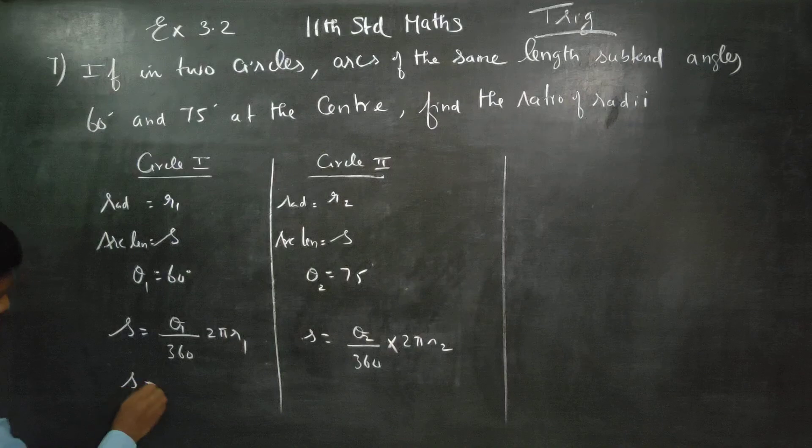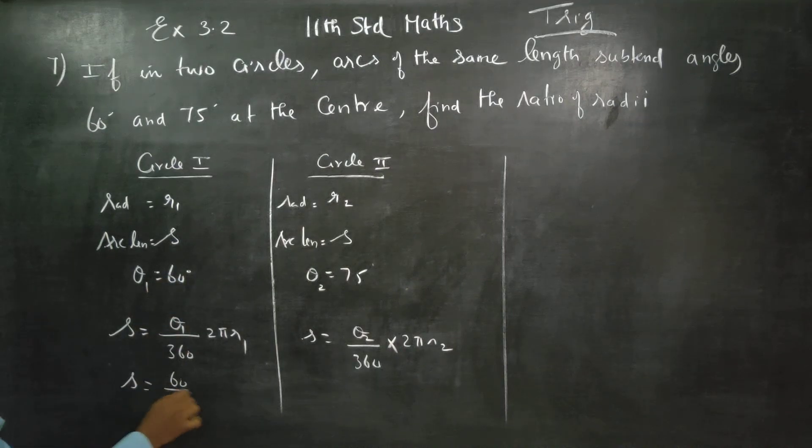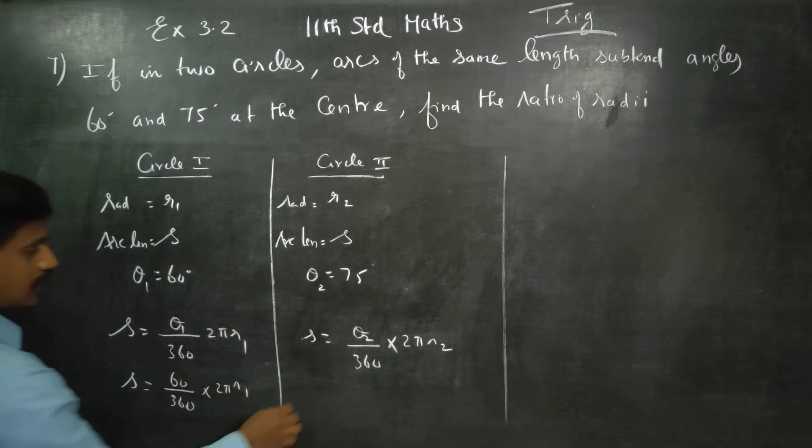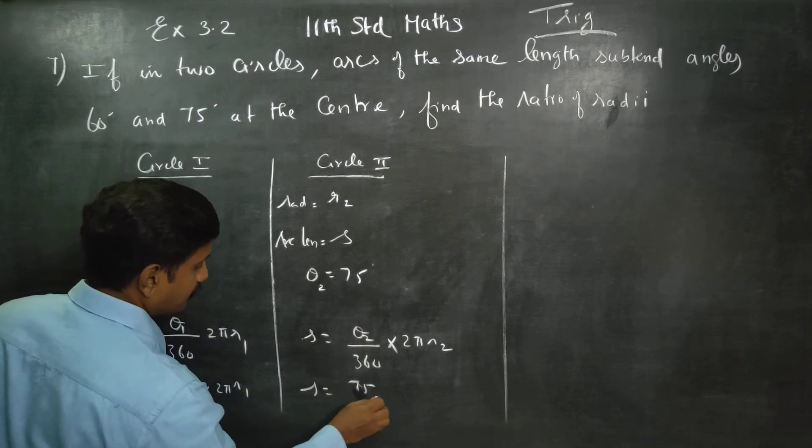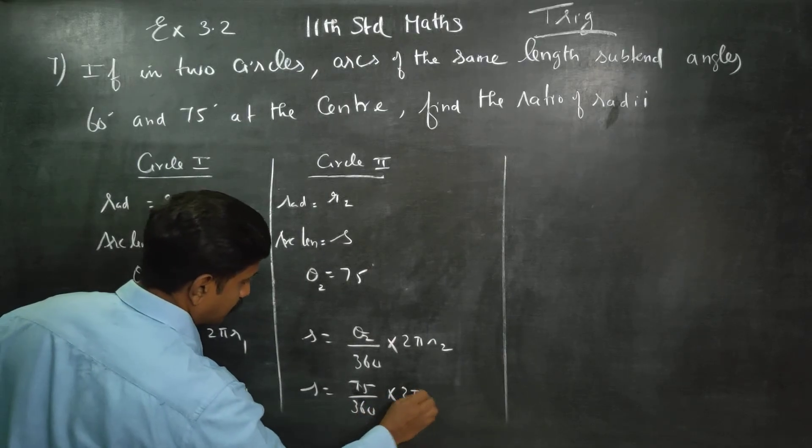S equals 60 by 360 into 2 pi r1. S equals 75 by 360 into 2 pi r2.